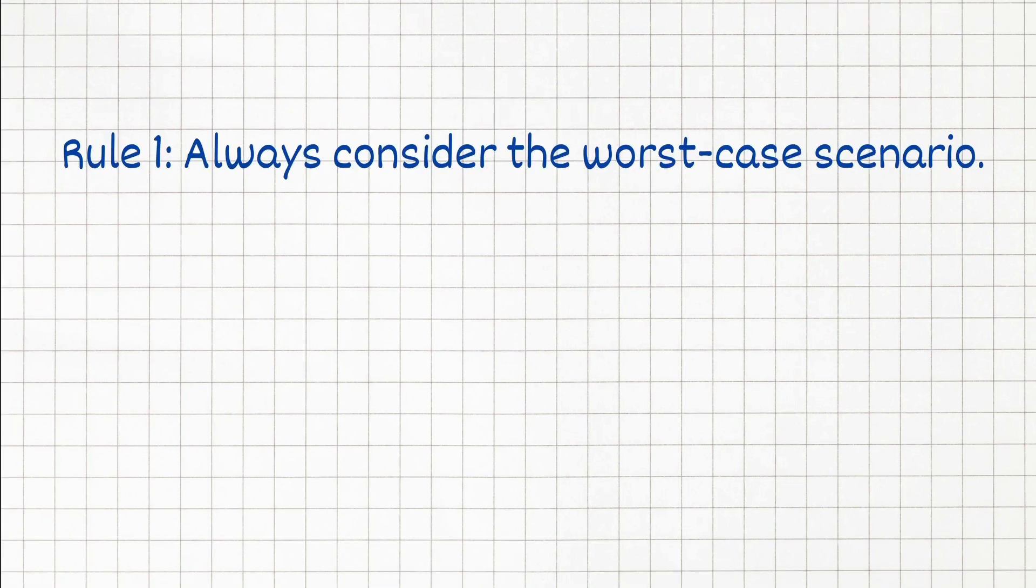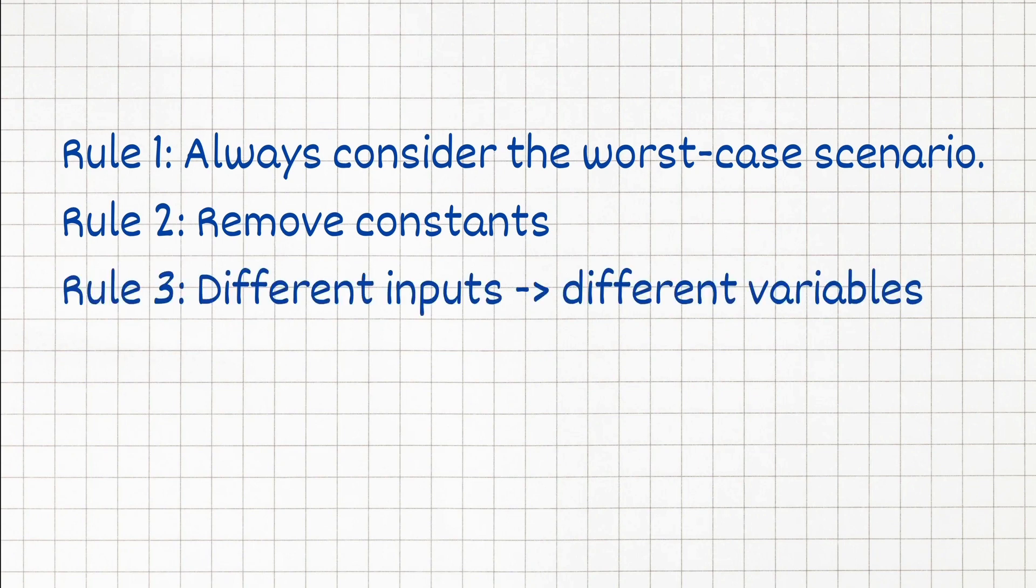It's important to remember a few rules when dealing with big O notation. The first one is that you always have to consider the worst case scenario. Next you have to remove constants. We are more interested in how our algorithm grows, instead of the precise details.